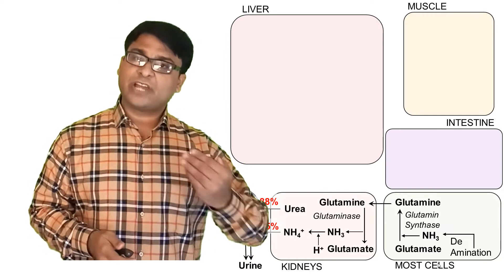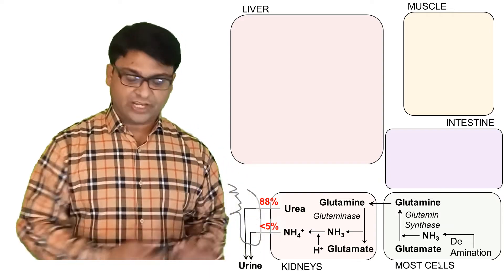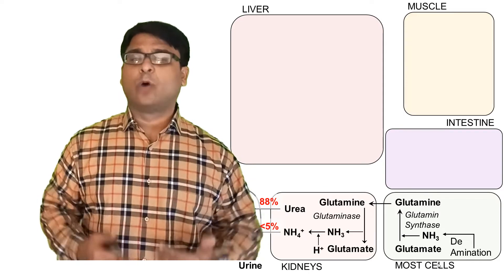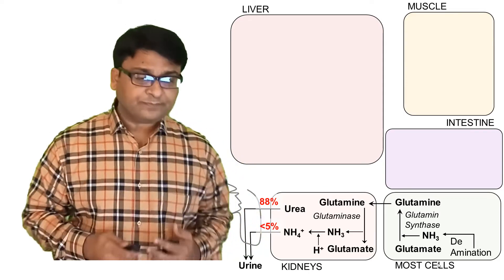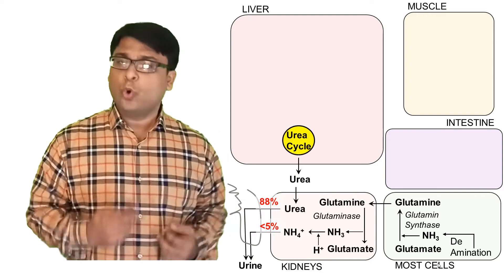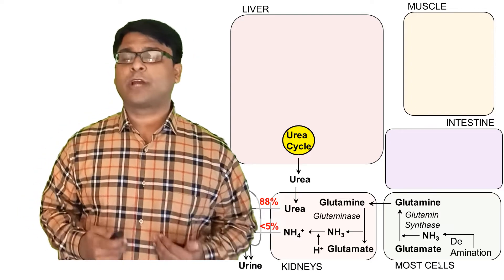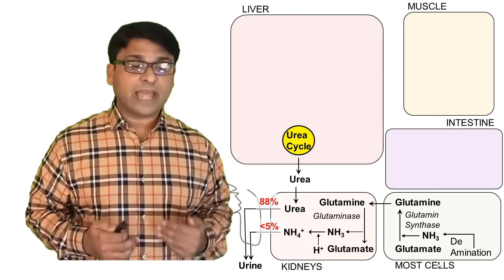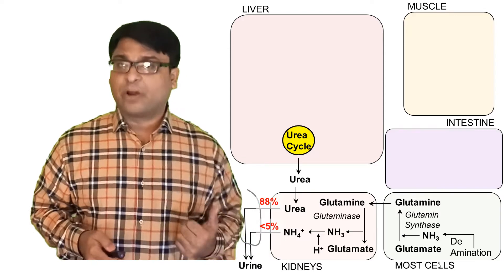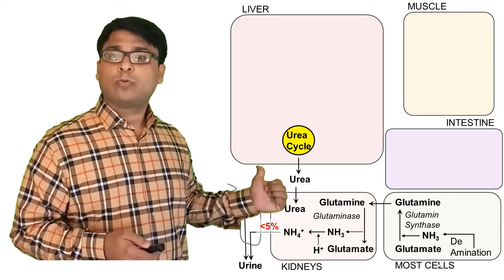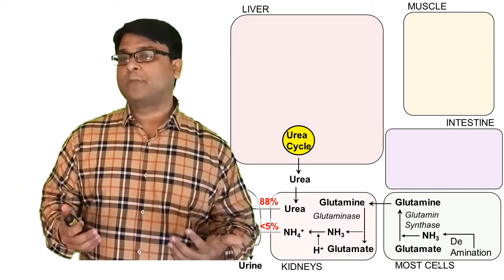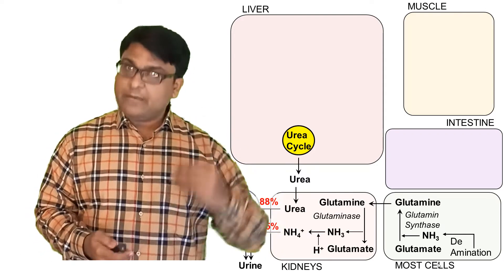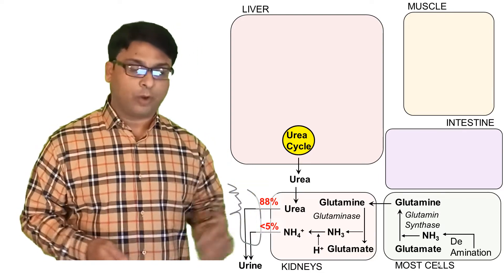Once glutamine is inside the kidney, it is converted back to glutamate and ammonia is released, which is then excreted in urine. Urea, the other end product of protein metabolism, is produced by the urea cycle which largely happens inside the liver. The liver releases urea into the blood — urea does not make the blood alkaline — and urea ultimately travels to the kidney and is excreted from the body.